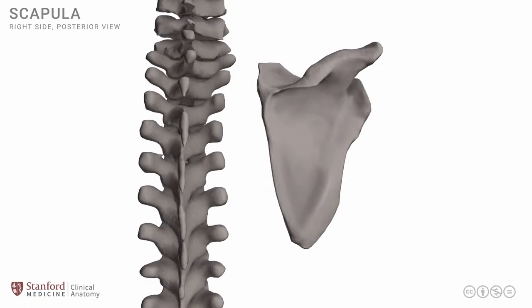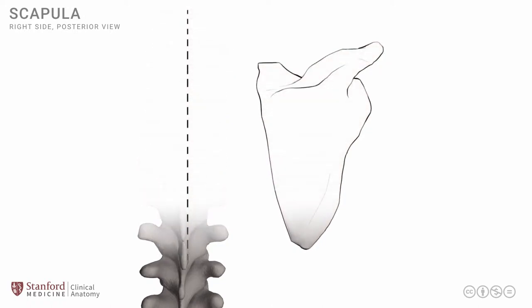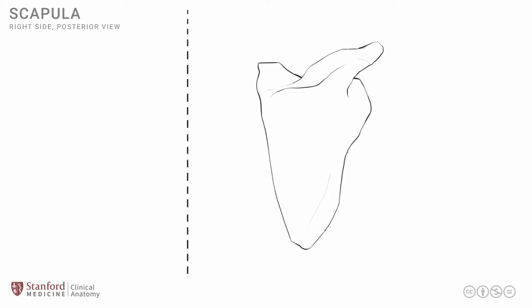Note that we still have the right-sided scapula, and so the midline structures — the vertebral column and the scapula — will be in the relationship as shown here. We will now convert this into a very simple schematic line diagram. The dashed vertical line represents the vertebral column, and the scapula is as shown here.